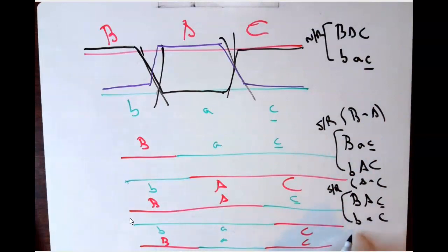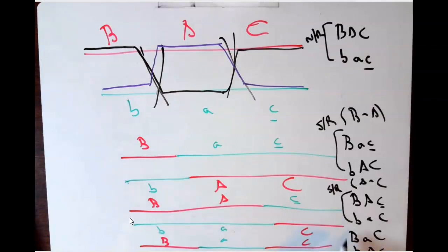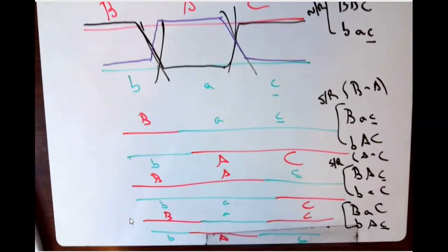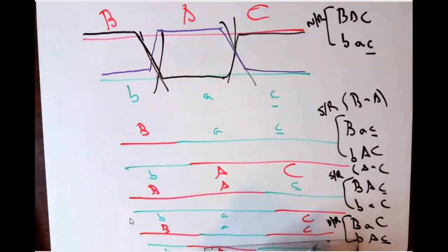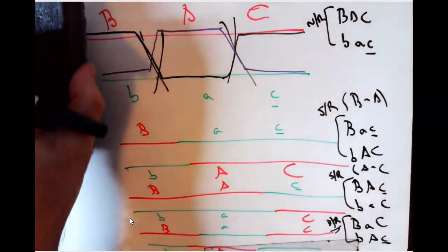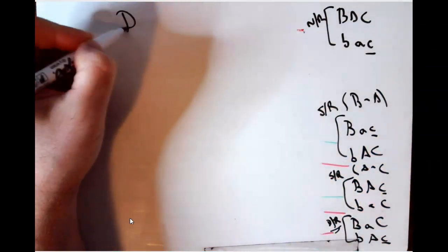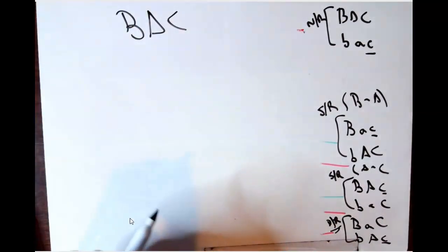For one chromosome in the double recombination, we pick up the dominant B allele, then switch down to grab the recessive A allele, then switch back up to get the dominant C allele. The other chromosome starts with the recessive B allele, then picks up the dominant A, then the recessive C. That's the result of a double recombination event. The original linkage pattern we started with was B, A, C.